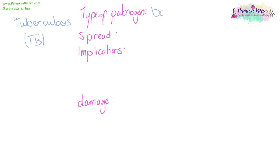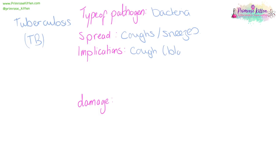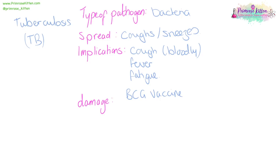Tuberculosis is a bacteria and it is spread by coughs and sneezes. It is going to lead to a cough — which may be bloody — fever, fatigue, swelling, weight loss, sweat, and loss of appetite. To help combat that, the BCG vaccine is routinely given to babies and children. This can be fatal.